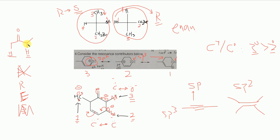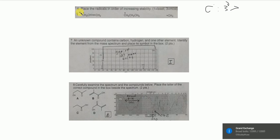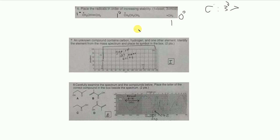Radicals in order of increasing stability: radicals prefer tertiary > secondary > primary. One radical is on a primary carbon with no resonance, one is on a primary with resonance (allylic), and one is on a methyl group — least stable. Order of increasing stability: methyl (least) < primary no resonance < primary with resonance.